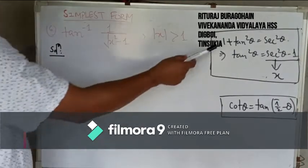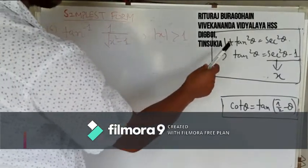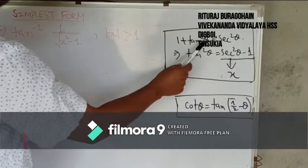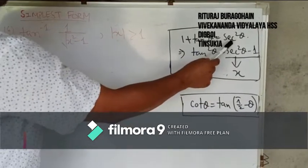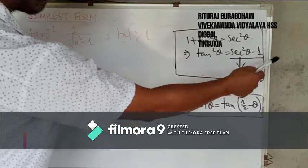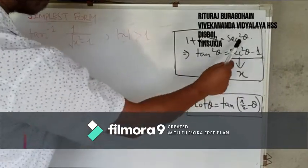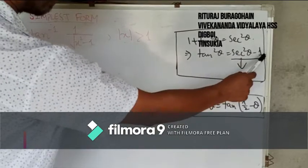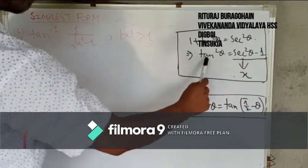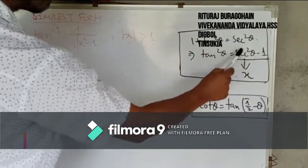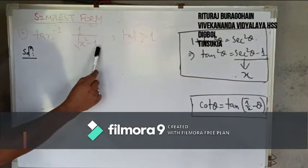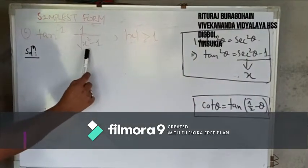Here I have written down already. You can see that we know 1 plus tan squared theta equals sec squared theta. Now if we transpose this 1 to that side, then it will be sec squared theta minus 1, which is equal to tan squared theta. Now this, sec squared theta minus 1, is of this type: x squared minus 1.